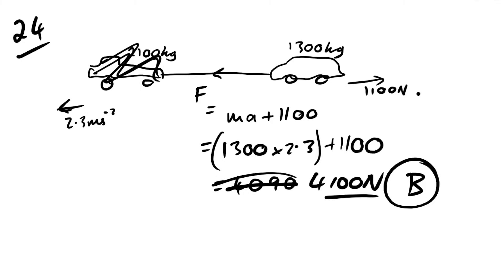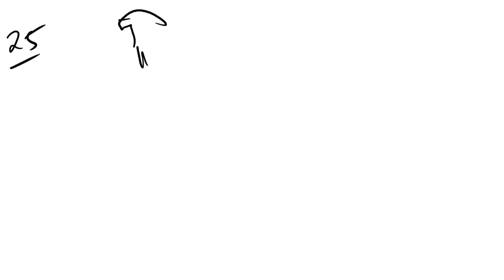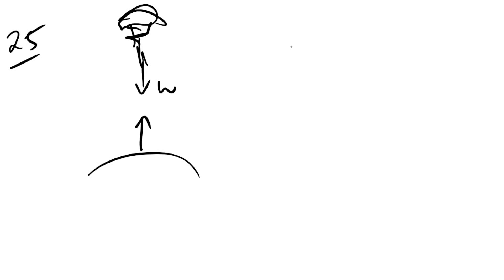Question 25: a parachutist descends at constant speed. By Newton's third law, the force paired with the parachutist's weight is the gravitational pull of the parachutist on the Earth. The answer is C.